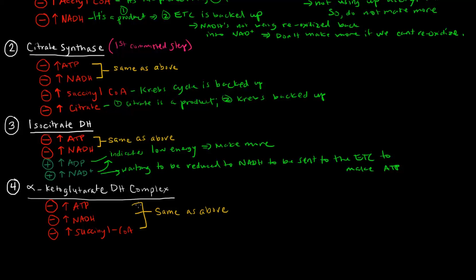Alpha-ketoglutarate dehydrogenase complex has three allosteric effectors, all of them inhibitors, and we've seen all three of these inhibitors before — they are also inhibitors of citrate synthase. So the same idea applies; they are inhibitors for the same reason.